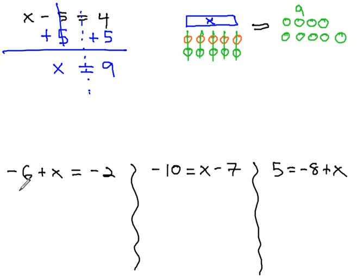In this first example, down here at the bottom, we've got the x with the negative 6. To get rid of the negative 6, we need 6 positives, introduced on both sides to maintain balance.